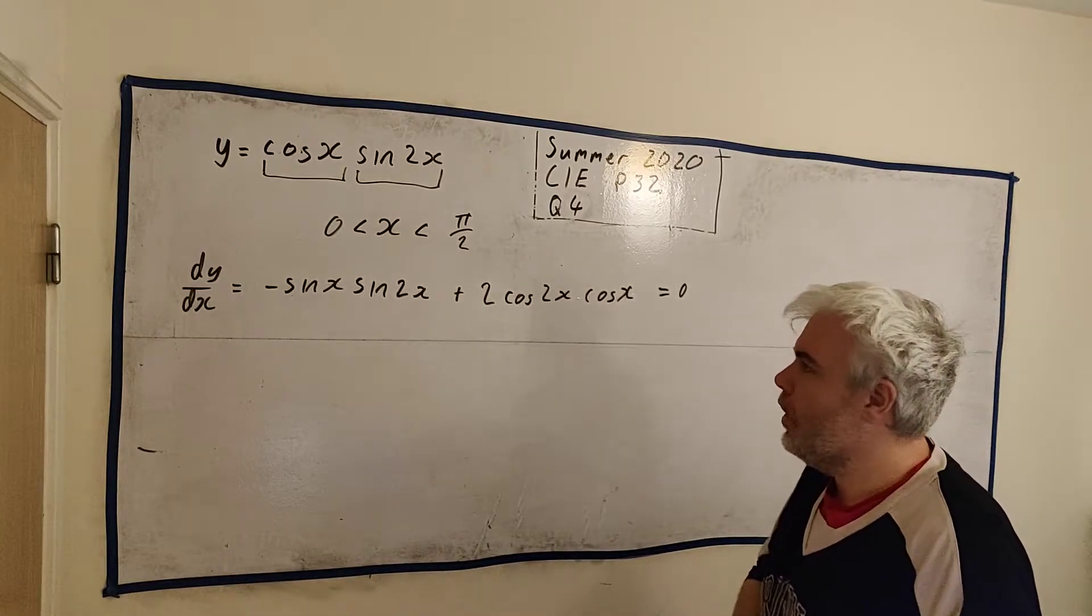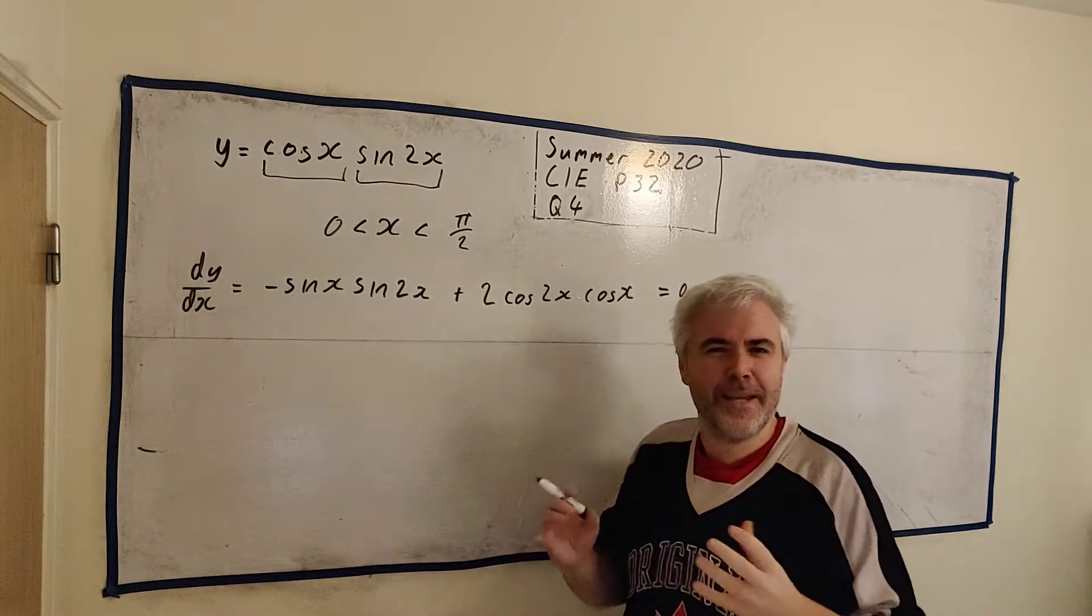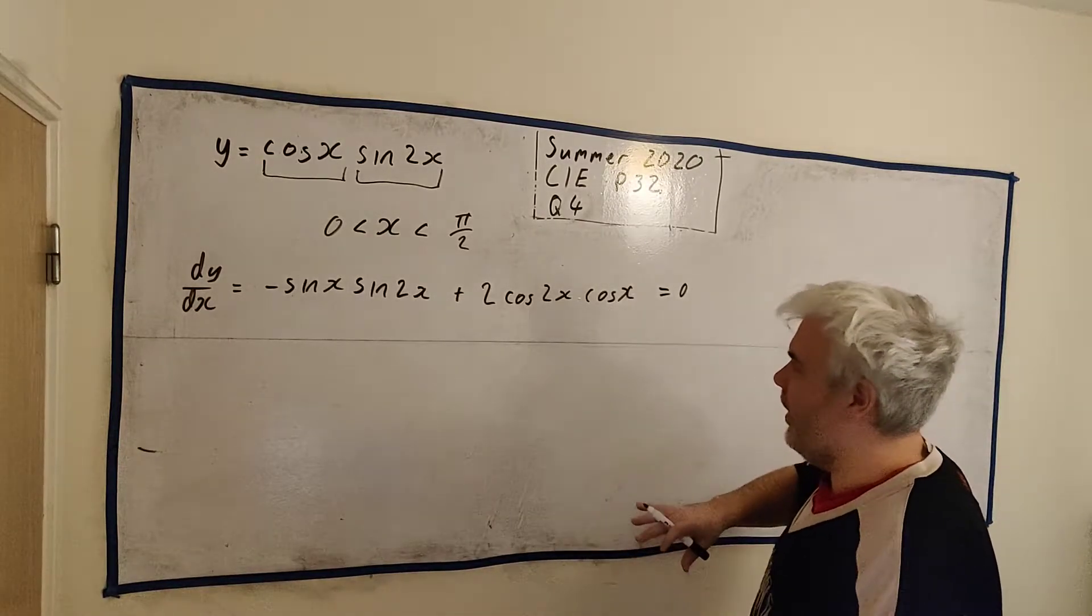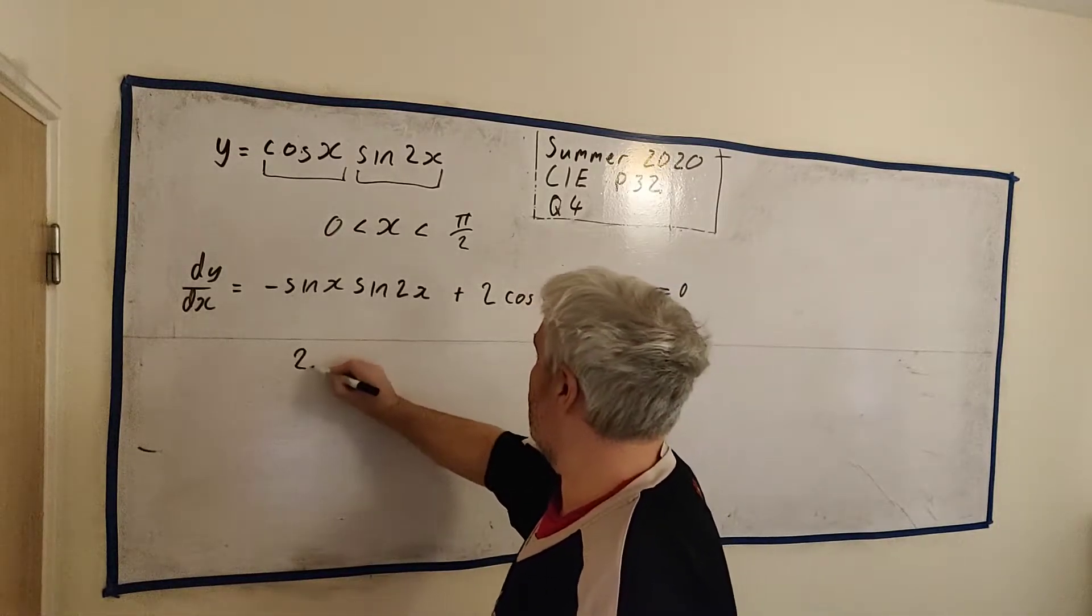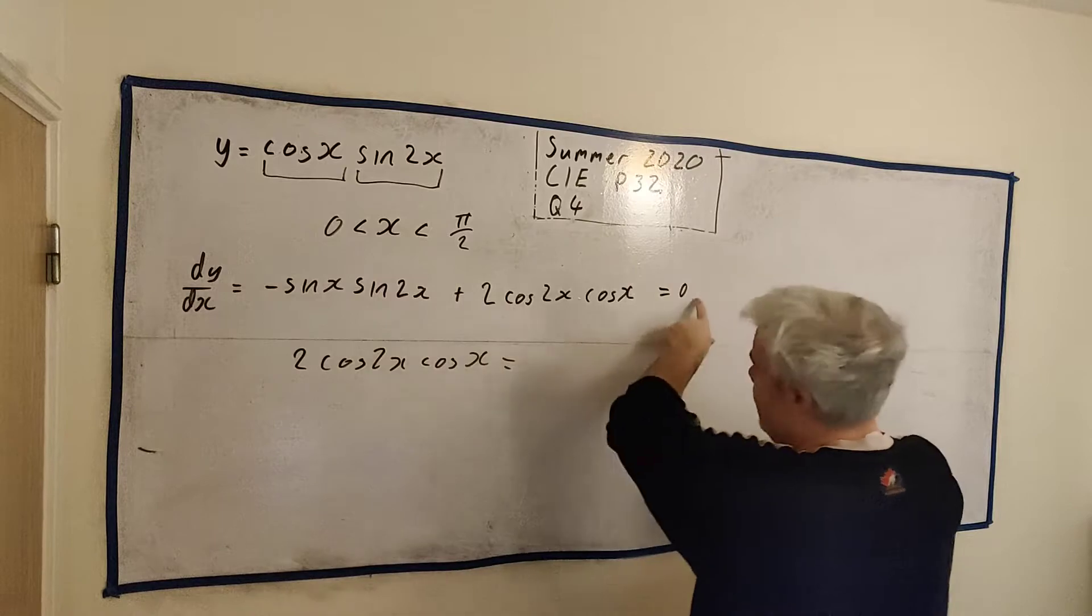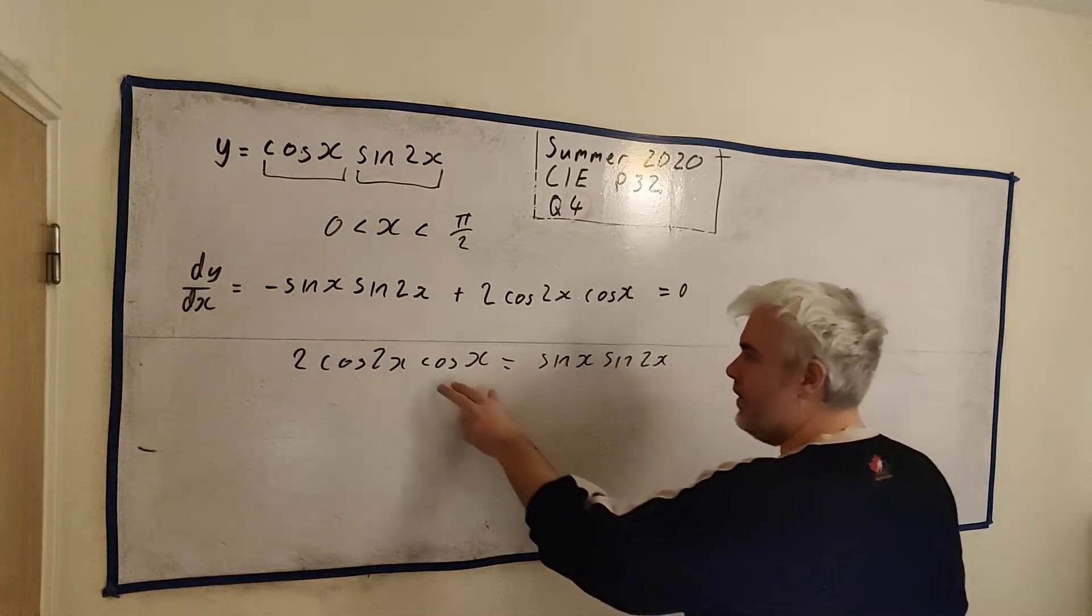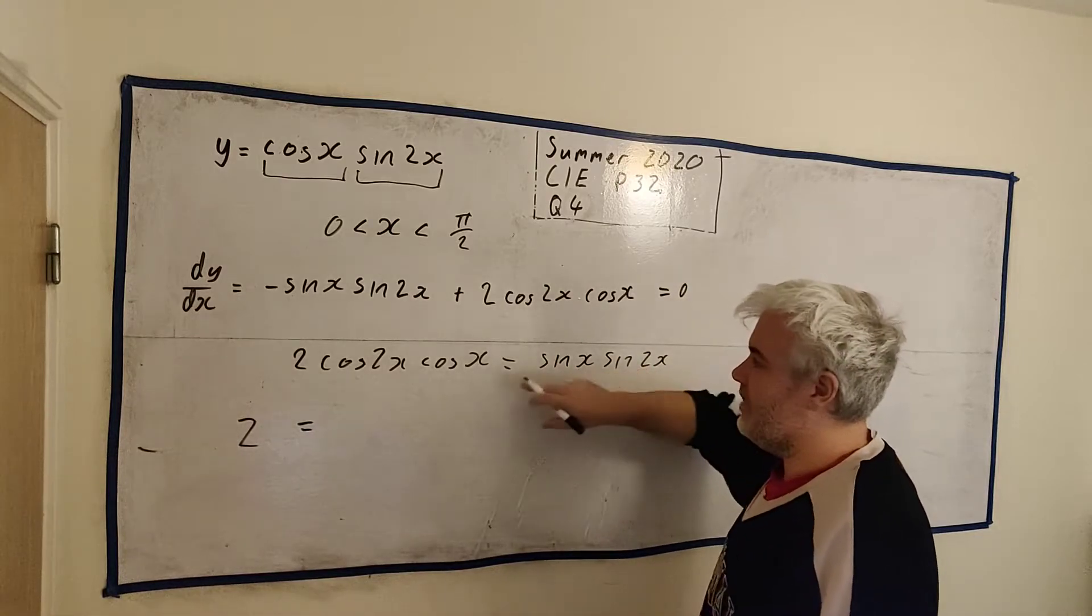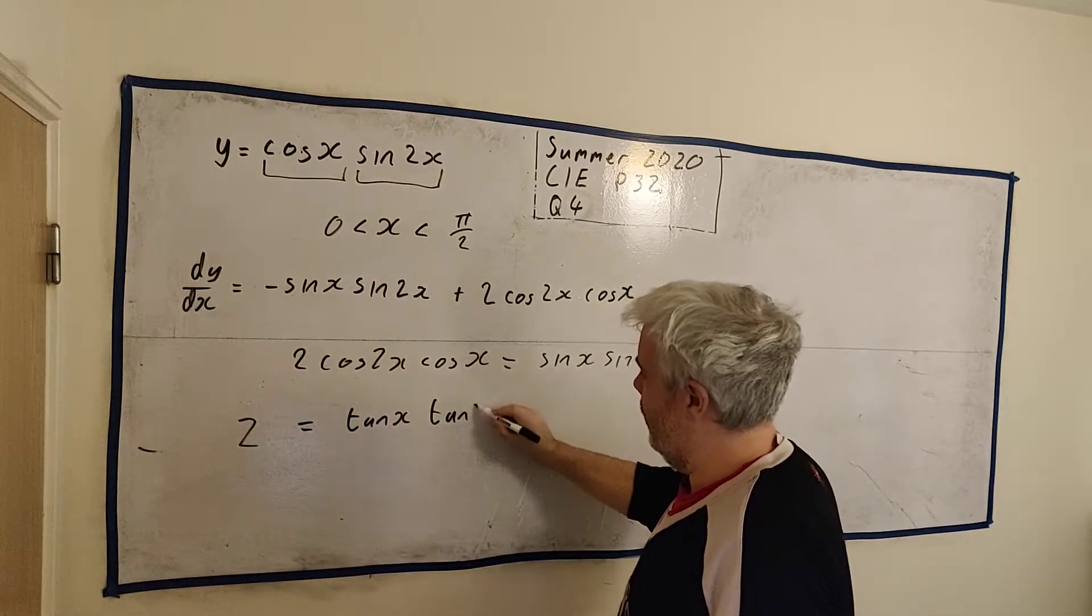There's a couple of choices to do. We have rules for sine 2x, what it equals. We know what cosine 2x equals. We can separate it out into sines and cosines. But I'm just going to stay trying to put it together as it is. And I'll get into tangents, I think. First of all, let's add this to both sides, which will leave 2 cosine 2x cosine x is equal to sine x sine 2x. Now let's divide both sides by cosine x and by cosine 2x. We'll be left with 2 on the left. And on the right, sine x divided by cosine x is tangent x. Sine 2x divided by cosine 2x is tangent 2x.